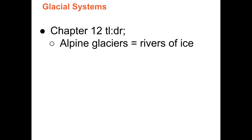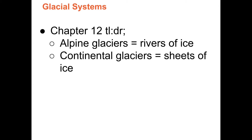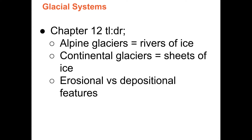The too-long, didn't-read version of this chapter: glaciers can be divided into two broad categories. Alpine glaciers are rivers of ice that flow down valleys, and continental glaciers are sheets of ice that flow over flatter landscapes. Another key division is thinking of landforms as either erosional or depositional — erosional landforms are made by removing material, which is then transported and deposited elsewhere to make new landscape features.